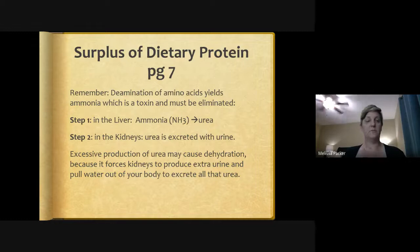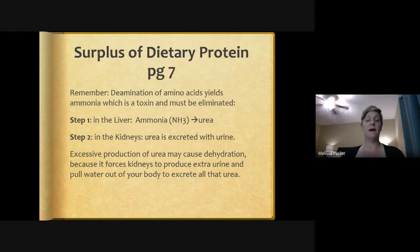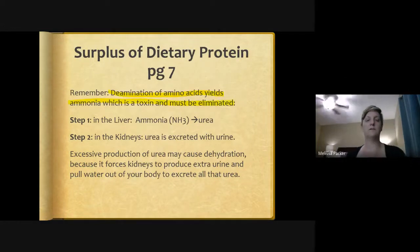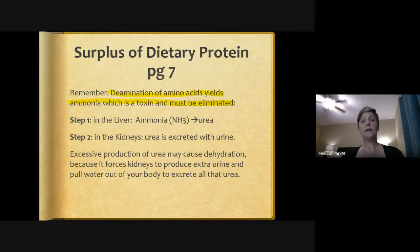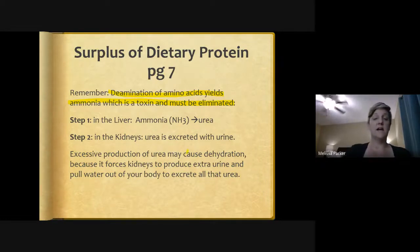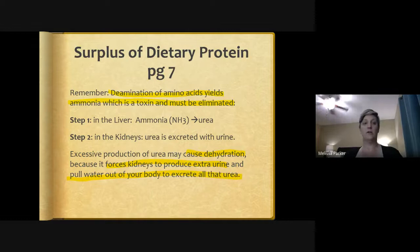Deamination of amino acids yields ammonia, which is a toxin that must be eliminated. Step one: in the liver, ammonia is converted to urea — we cannot excrete ammonia directly, it must be converted first. Step two: in the kidneys, urea is excreted as urine. Excessive urea production can cause dehydration because it forces the kidneys to produce extra urine, pulling water out of the body. Using protein for fuel can actually dehydrate your body.